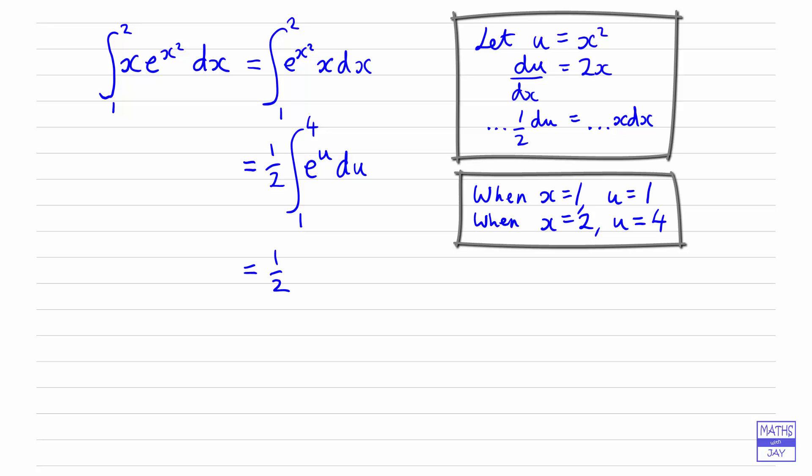So let's integrate. Well integrating e to the power of something is going to still be e to the power of something, so it's e to the power of u between 1 and 4. So substituting in those values, let's put the 2 underneath, we get e to the power of 4 minus e to the power of 1, which gives us e to the 4 minus e over 2.